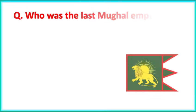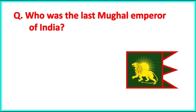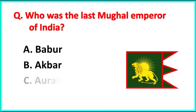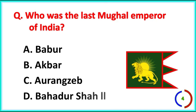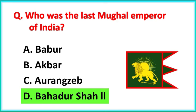Who was the last Mughal Emperor of India? The correct answer is option D: Bahadur Shah the 2nd.